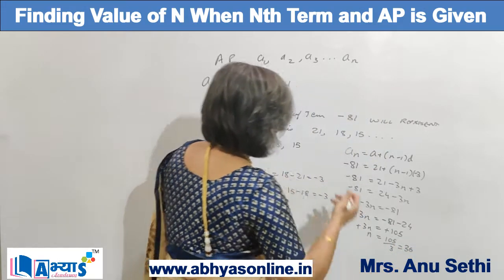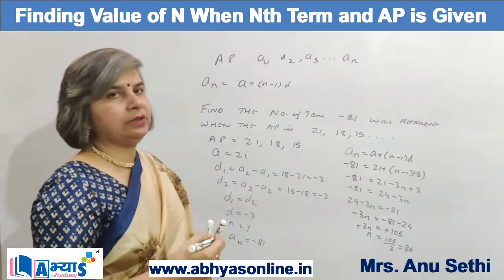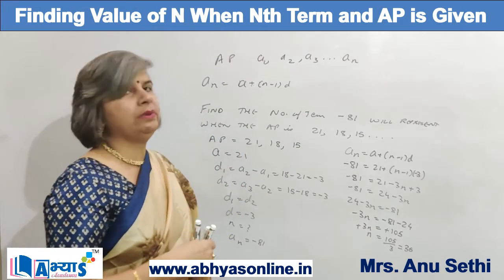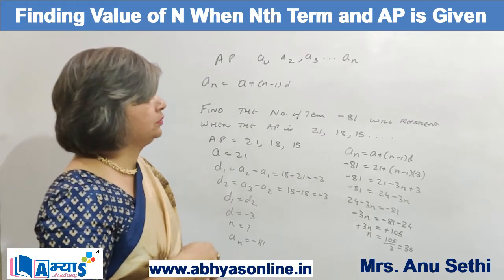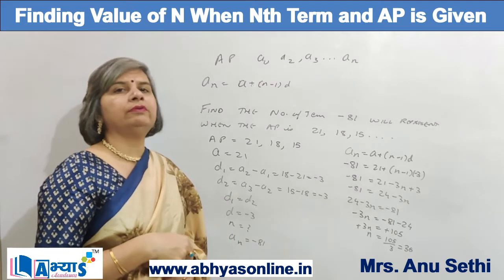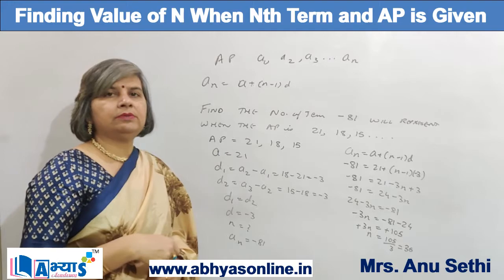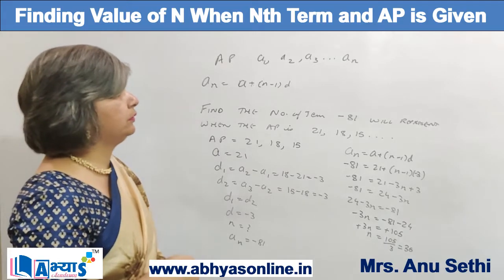So the value of n is 35. That means the 35th term of this AP is equal to -81. This is how we can find the value of n when the nth term is given and the AP is also given.